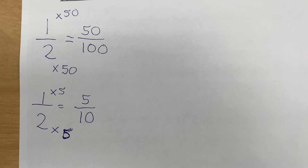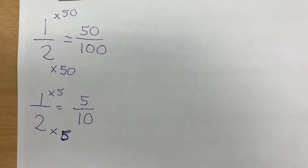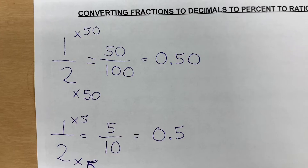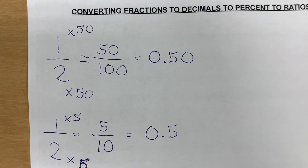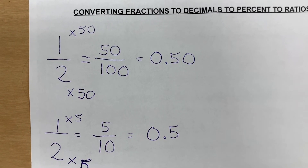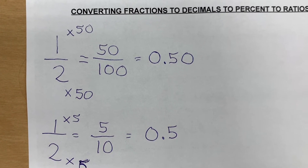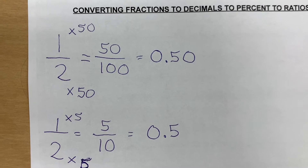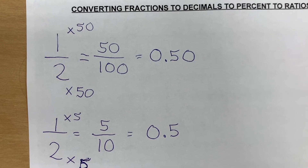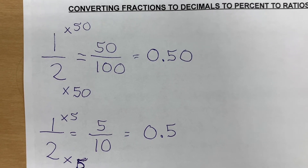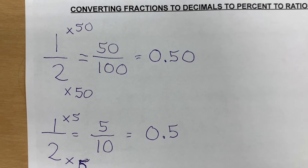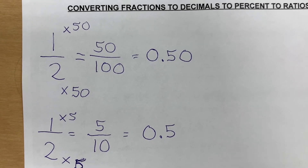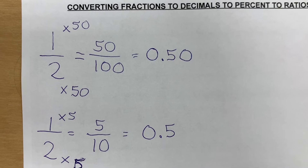So watch the next step. If we look at 50 over 100 and we're going to change that to a decimal, there is no ones place, so we put a zero.